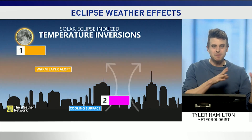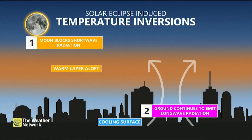Here is the impact on the atmosphere: an inversion is created because we cut off — we choke off — that shortwave radiation coming in from the sun. The longwave radiation continues to emit from the ground, which creates an inversion in the atmosphere, dropping the temperature, increasing the relative humidity, and lowering the wind speeds, albeit temporarily until the eclipse passes.